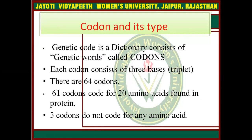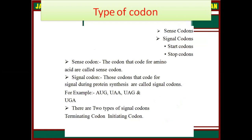Genetic code is a dictionary consisting of genetic words called codons. Each codon consists of 3 bases. There are 64 codons — 61 codons code for 20 amino acids found in proteins and 3 codons do not code for any amino acid. There are two types of codons: sense codons and signal codons. Sense codons are those that code for amino acids. Signal codons include start and stop codons — those that signal during protein synthesis.